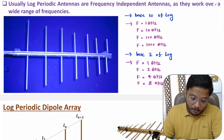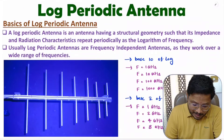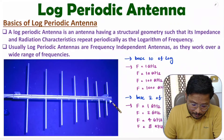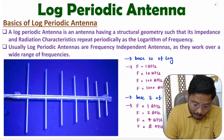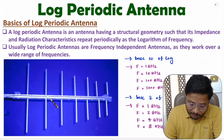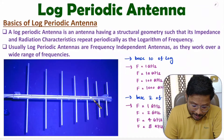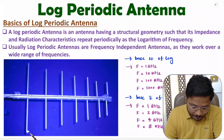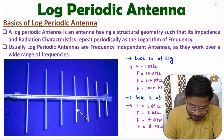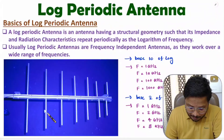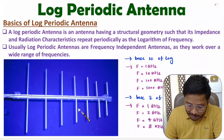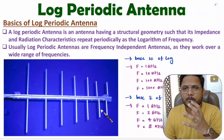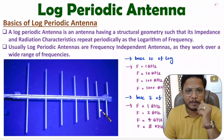Looking at the diagram I've drawn, this is a log periodic antenna with an array of dipoles. You can see the length of the dipoles is largest on one end, and as you move in the other direction the length is decreasing. Similarly, the spacing between dipoles is also decreasing in that direction. That is how a log periodic antenna is formed.